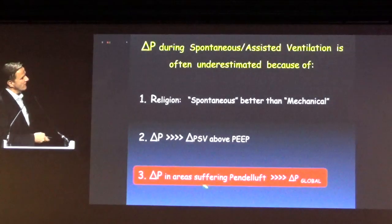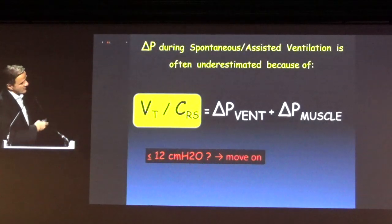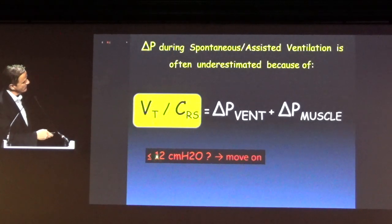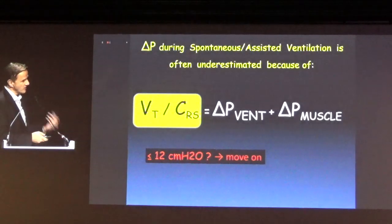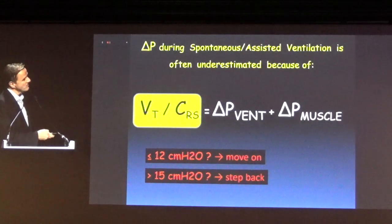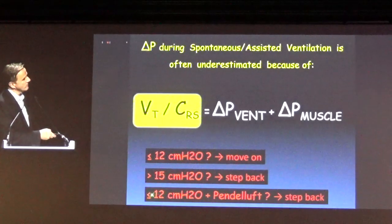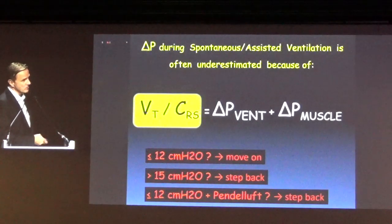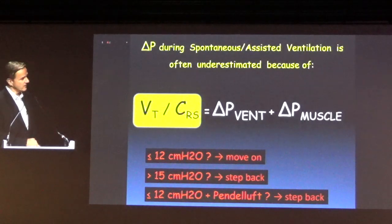In areas suffering Pendelluft, the local driving pressure can be much larger than what you calculate at the bedside. As a rule of thumb using Giacomo's method: if your global driving pressure is below 12–13, move on — perhaps keep spontaneous ventilation because you don't want to paralyze the patient again. But if it's above 15, maybe you have to step back. Pay attention: if it's below 12 but with Pendelluft detected by EIT, you very likely have to step back also, because that 12 is absolutely underestimated and this region may be suffering.